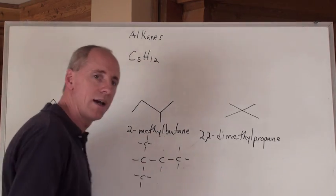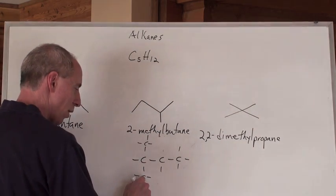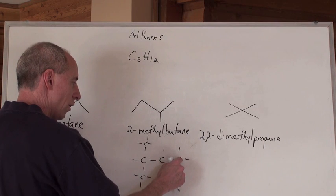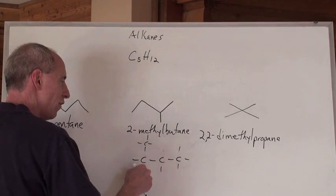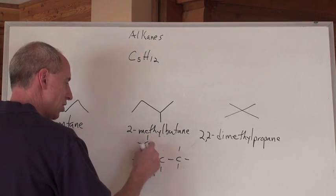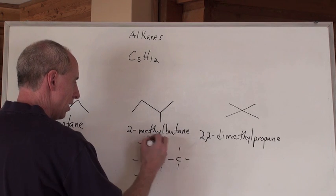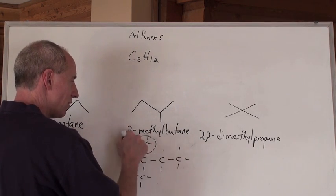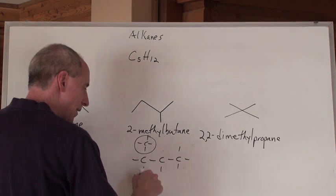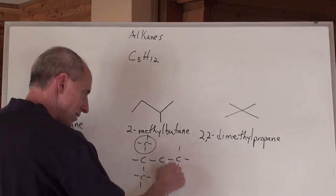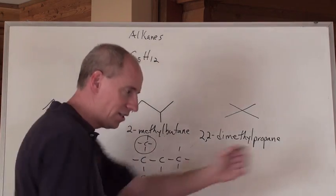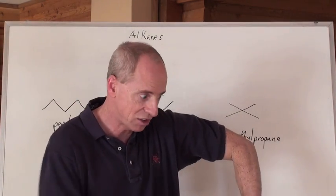Then you wouldn't have 1,1-dimethylpropane. Longest branch would be one, two, three, four. And you would still have your branch here. This is the longest continuous chain here with a branch here. And that would still be 2-methylbutane. Because even if this is bent or straight-chained, it's still an arm.